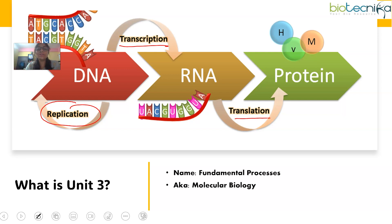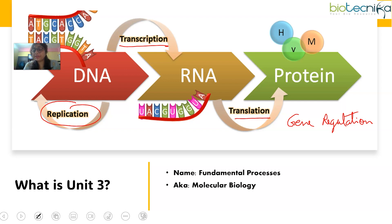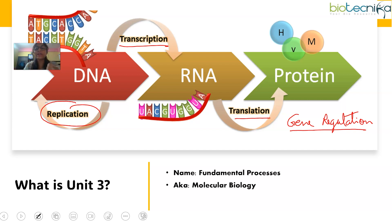Unit 3 also includes gene regulation — the process by which each and every gene's function is regulated in the cell. To understand this simply: we have many different cells in our body, but the genome content of all those cells is the same, yet they work differently, look differently, and are found in different parts of the body. This is done through gene regulation, which ensures that not all genes are expressed equally in all cells. Some genes are expressed only in stomach cells, while specific genes expressed in heart cells allow it to perform its function.